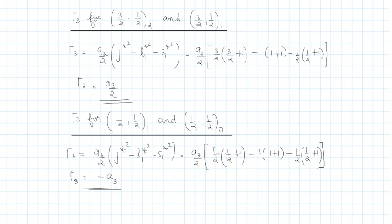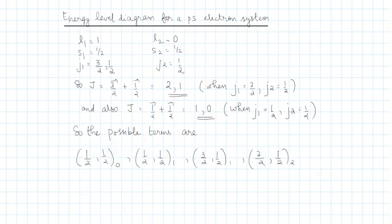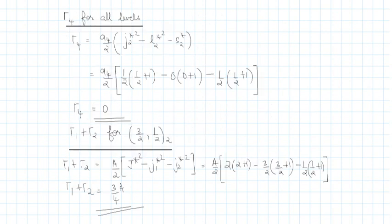For gamma3: for the (3/2,1/2) levels, j1 is 3/2 for both, giving gamma3 = A·(3/2). For the (1/2,1/2) levels, j1 is 1/2 for both, giving gamma3 = −A3. For gamma4, the equation only involves j2* squared. Since j2 is always 1/2 for all four levels, gamma4 is the same for all four levels and evaluates to zero.